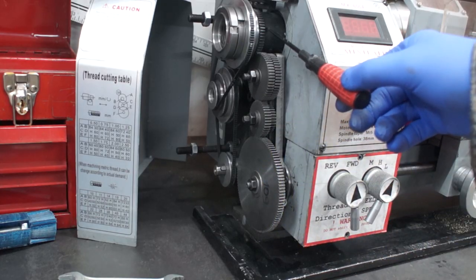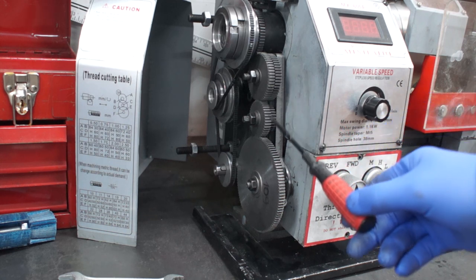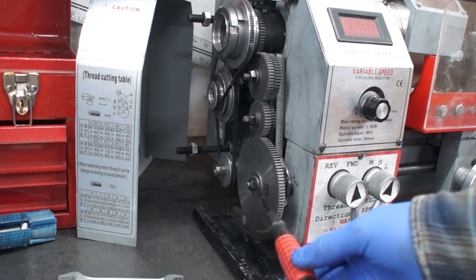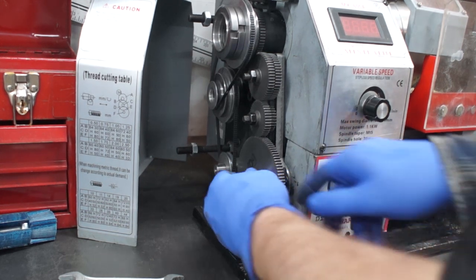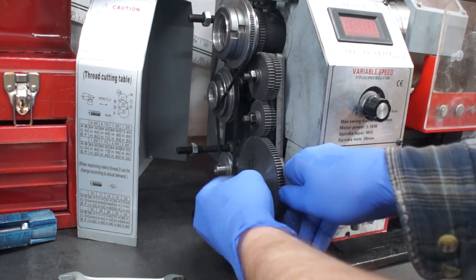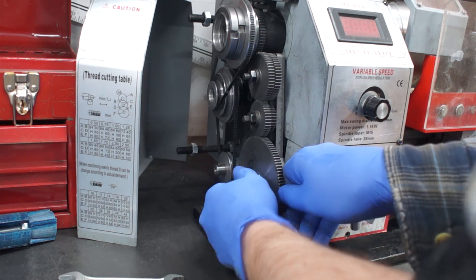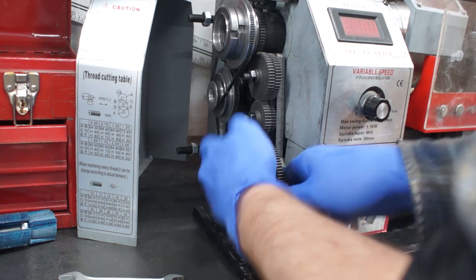The way threading works is spindle drives one gear, that gear drives another and another until it finally reaches the gear that drives the lead screw. So depending on the gear teeth count and where they are placed, lead screw turn ratio to the spindle turn ratio will change, but you already knew that.